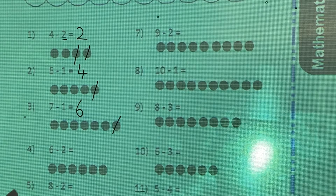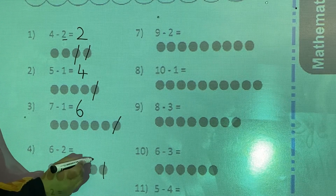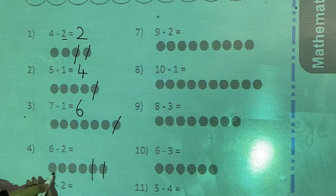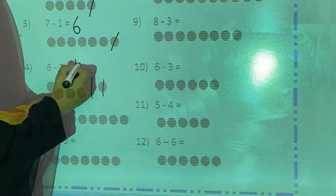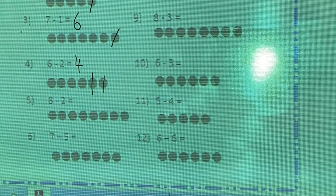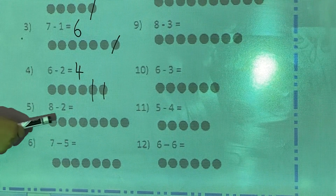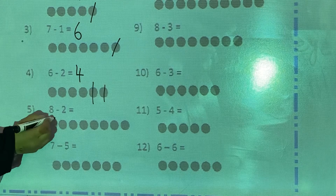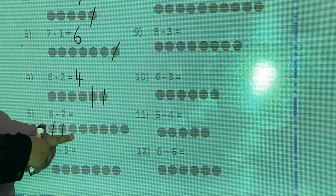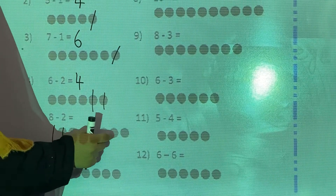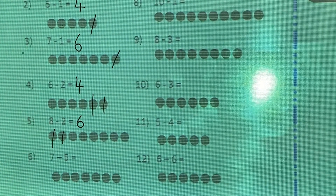Now 6 minus 2. You have to cut 2: count 1, 2. How many are left? Count: 1, 2, 3, 4, 5, 6. So the answer is 6.